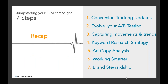To summarize the seven steps to jumpstart your SEM campaigns: do a little spring cleaning for your conversion tracking updates; rethink how you're doing A/B testing and lean into Google's resources; visualize your movements and trends at a holistic industry level; change the way you're doing keyword research and leverage Google's tools; analyze your competitors' ad copy to find areas where you can eke out greater search understanding; work smarter by leaning into smart campaigns as early adopters; and lastly, try to be a brand steward rather than just a brand owner.